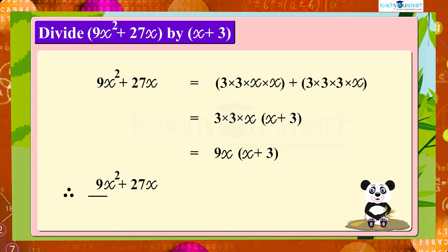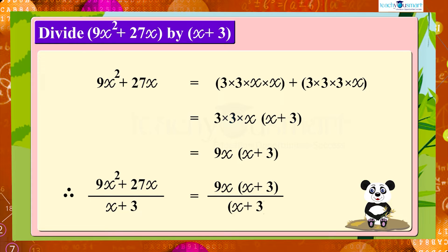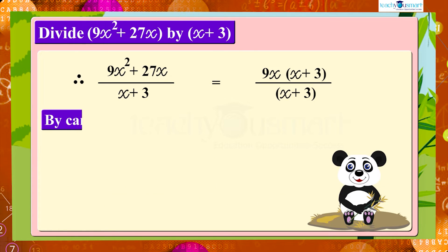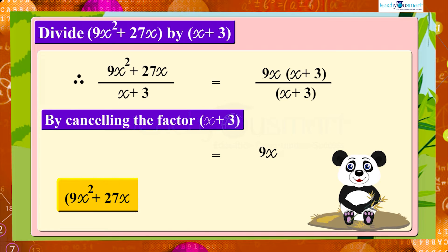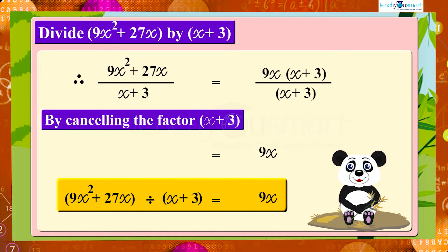Therefore, 9x² + 27x divided by (x + 3) equals 9x × (x + 3) divided by (x + 3). By cancelling the factor (x + 3), we get 9x. That is, 9x² + 27x divided by (x + 3) equals 9x.